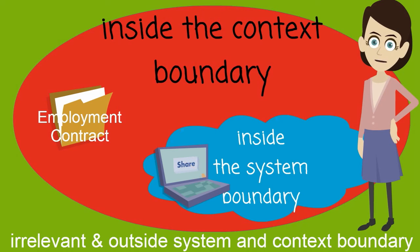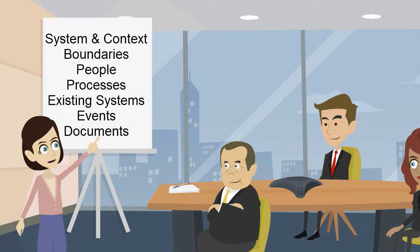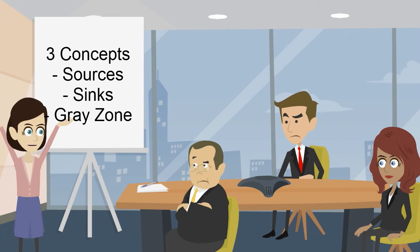If you are able to consider these decisions about the system and context boundary when you consider all the key aspects — people, process, systems, events, and documents — you will be defining your system context with ease and clarity.